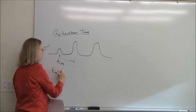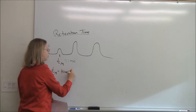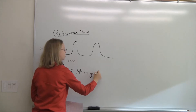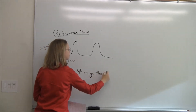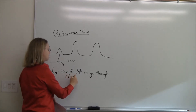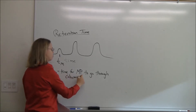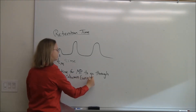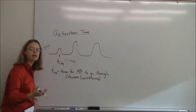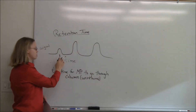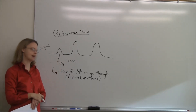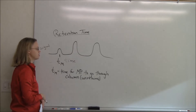T-sub-M is the time for the mobile phase to go through the column. This is where anything that would be unretained by the stationary phase would come out. Oftentimes you'll get a peak there, sometimes you won't. But there's always this sort of time, and everything needs to be measured off of that time — that time alone doesn't count as far as separation goes.